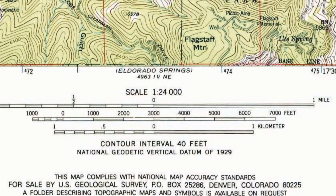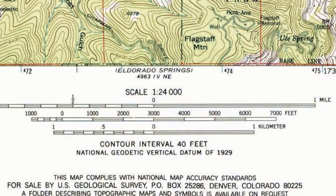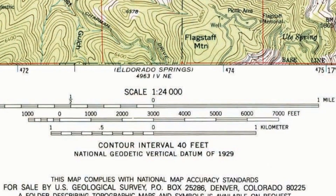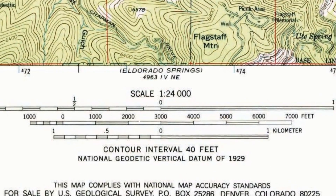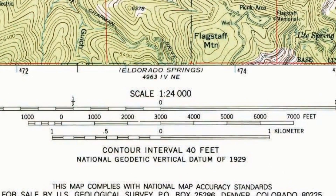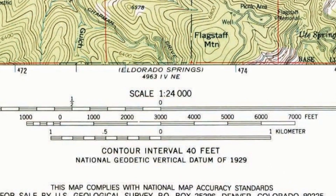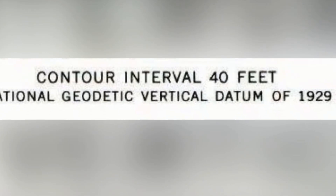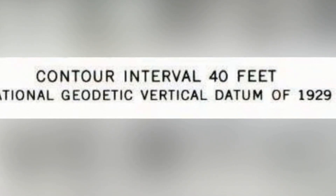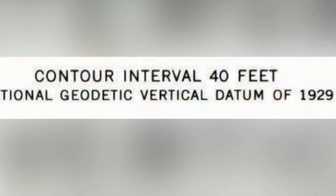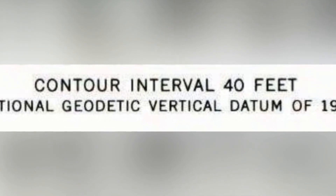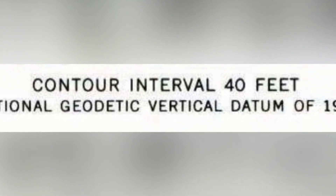The contour interval is the difference in elevation between adjacent contour lines. It is typically indicated in the map's legend or margin. For instance, a contour interval of 40 feet means that each contour line represents an increase or decrease in elevation of 40 feet.